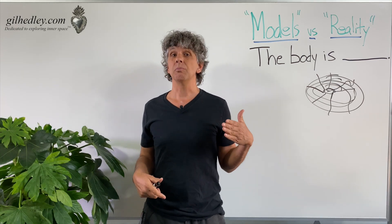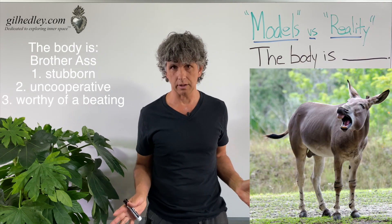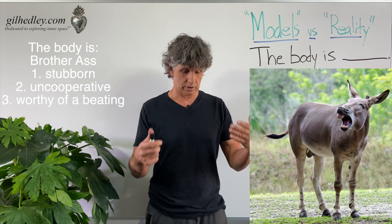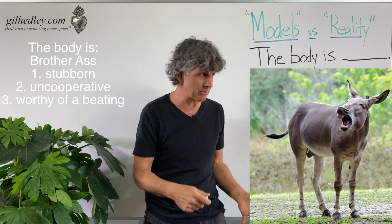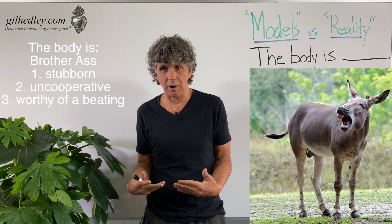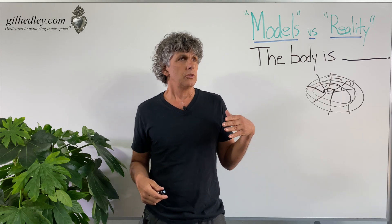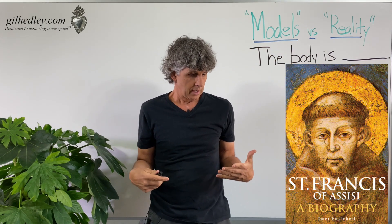St. Francis' model of the body was "brother ass" — the body as a mule. Imagine how they treated mules in the 13th century. Mules are already a little stubborn as it is. So if you consider your body to be just a stubborn animal that you need to beat into submission, you'll have a relationship with your body that might be a little on the negative side. St. Francis died at 42 years old, having flogged the mule unto death — he was blind from fasting, and he laid down on his mat and died while apologizing to brother ass.